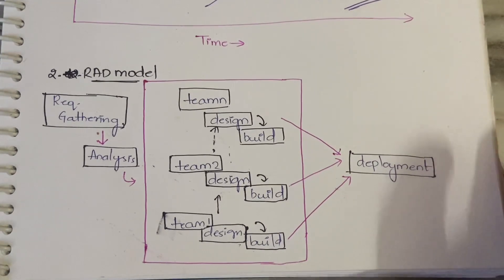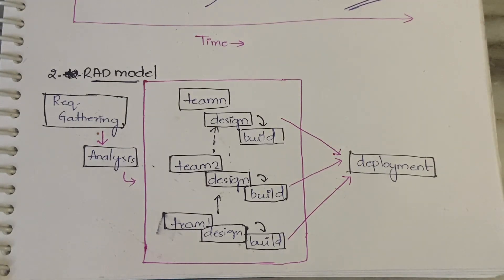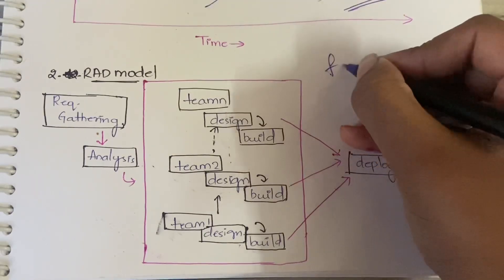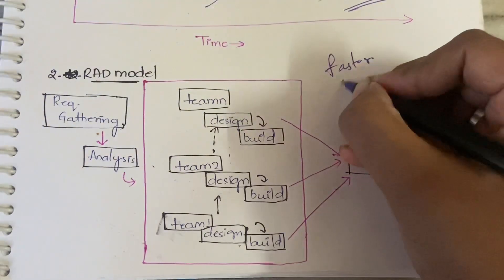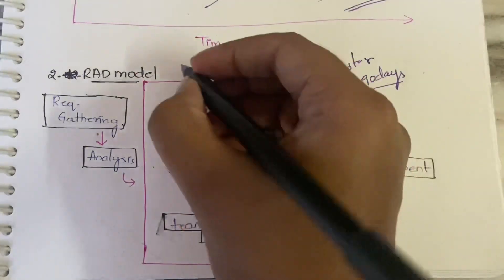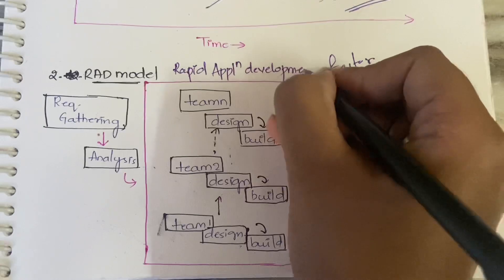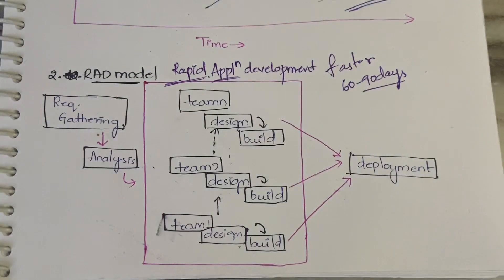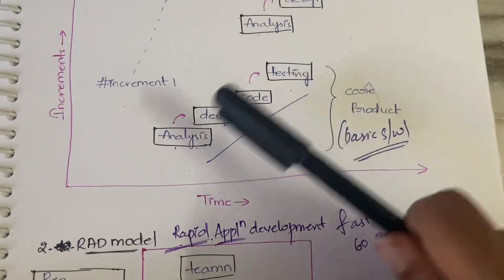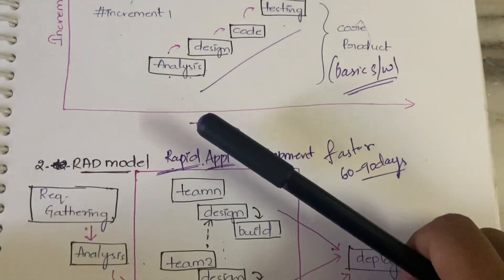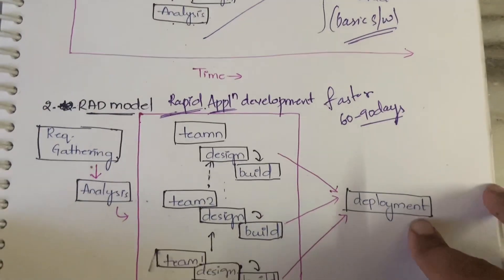Now let's move to the RAD model — Rapid Application Development. Why do we have two different things? When you have a short period of time and want to complete the project faster — within 60 to 90 days — you go with the RAD model. 'Rapid' itself says fast application development. When you want to develop the application really quickly, you use RAD. In the incremental model, all four steps — analysis, design, code, testing — are done in each increment, which takes time.